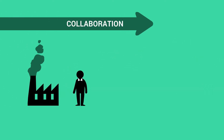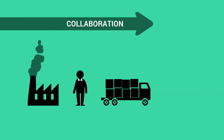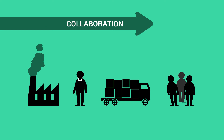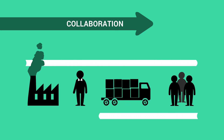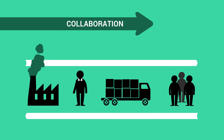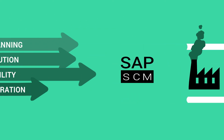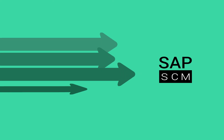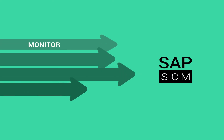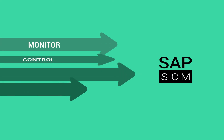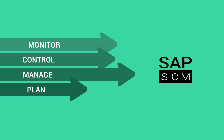Finally, the collaboration component helps you in coordinating different business components, both upstream and downstream of a supply chain network. You could collaborate and coordinate better with your suppliers using this component. Isn't it amazing how SAP SCM can be used to monitor, control, manage, and plan your supply chain activities?